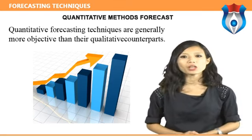Luckily, the decisions required to operate a successful enterprise rarely require 100 percent accuracy. As long as the demand forecast is reasonably accurate, the organization can still make the correct decision. Continuing with the previous illustration: if forecasted growth was 25 percent while actual annual growth was 28 percent, the company will still need to expand in the future. While the timing of their capacity expansion may be slightly incorrect, the plan to add capacity is still valid — in other words, the forecast was value-adding.